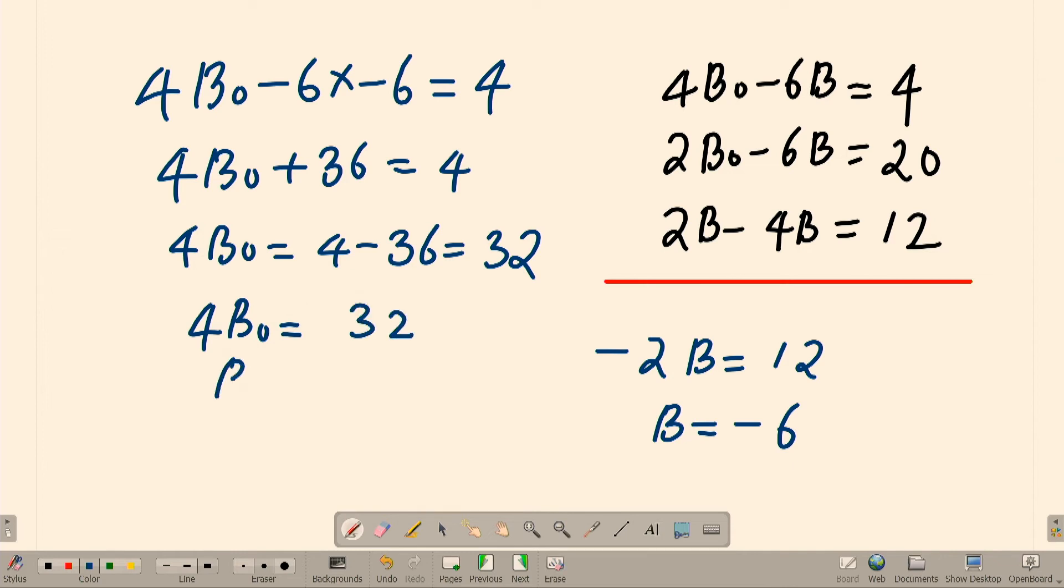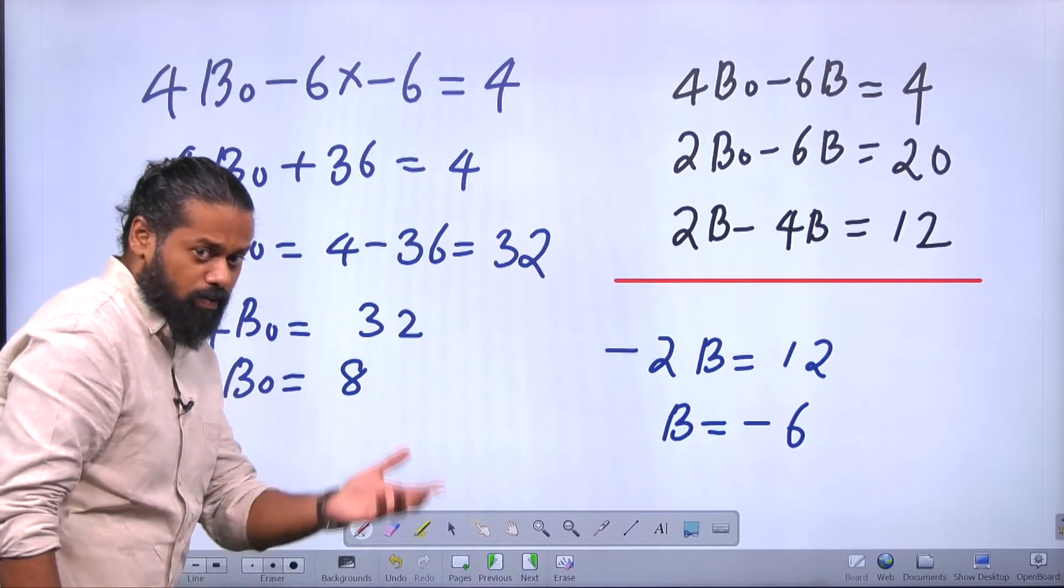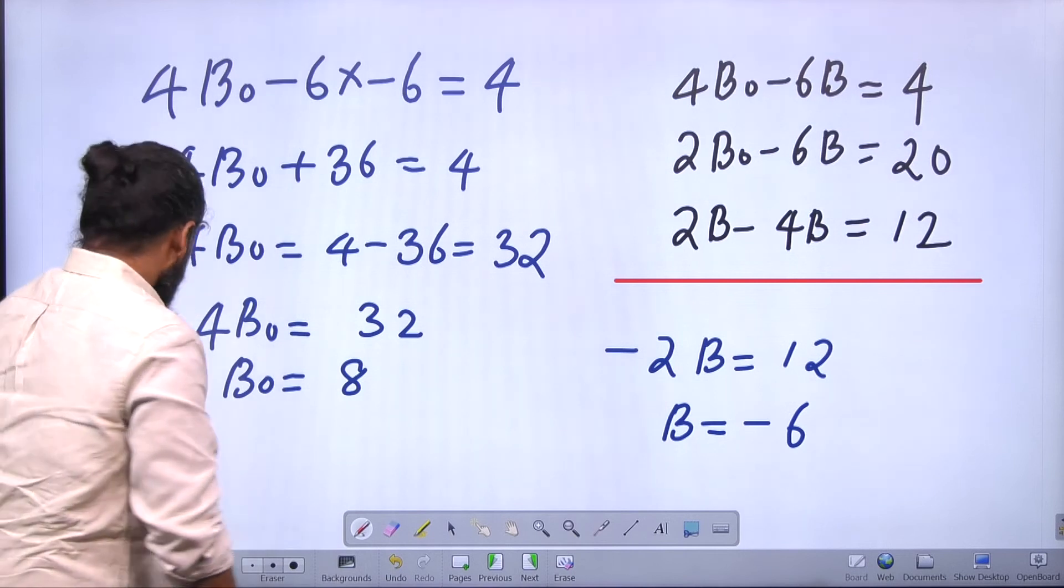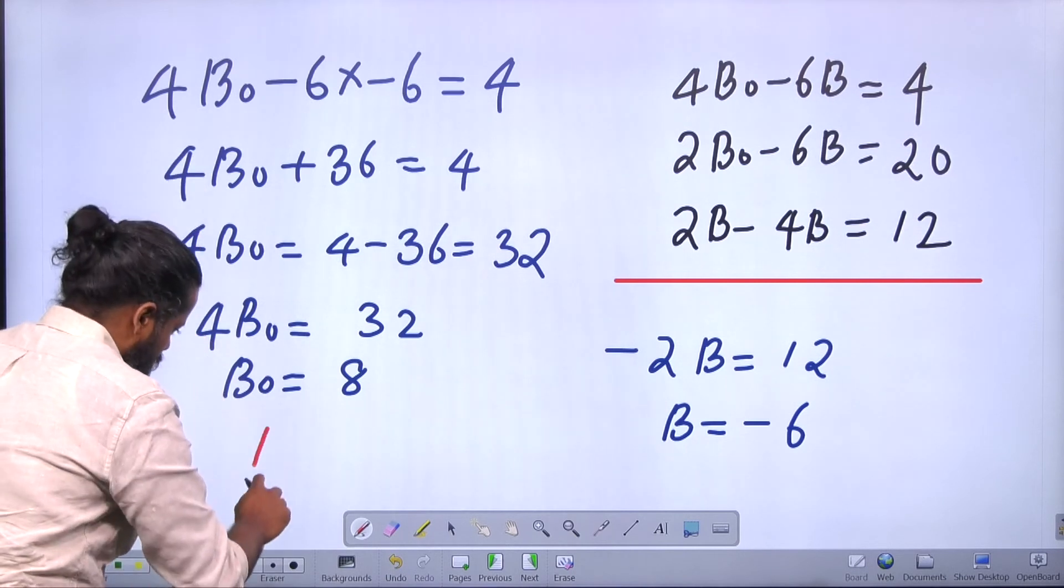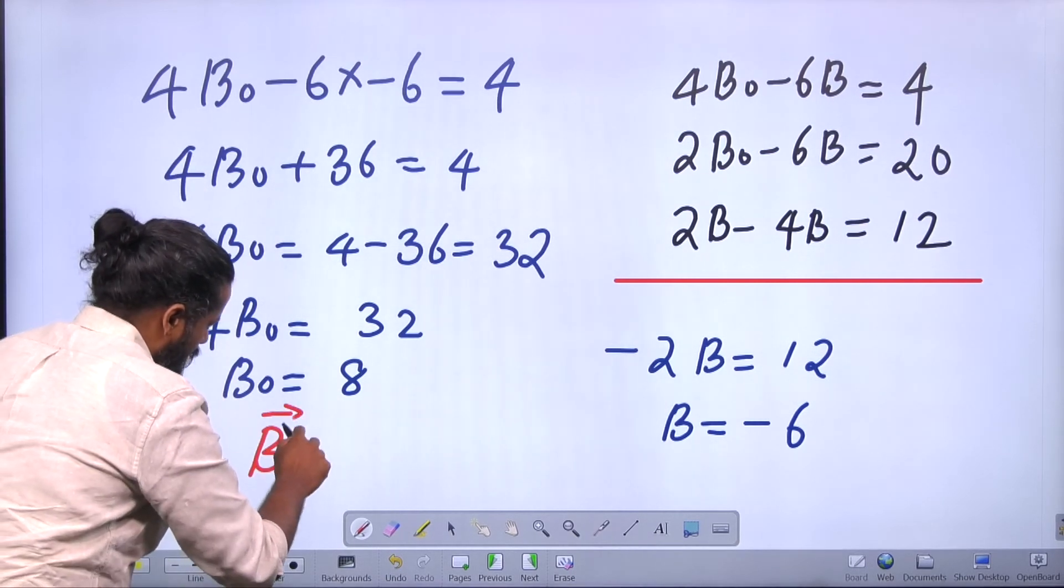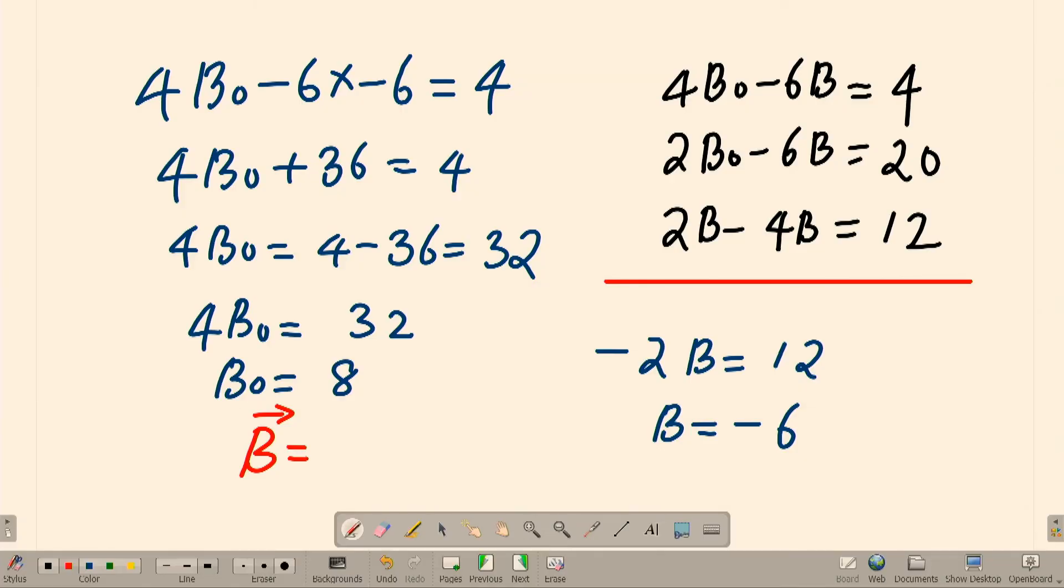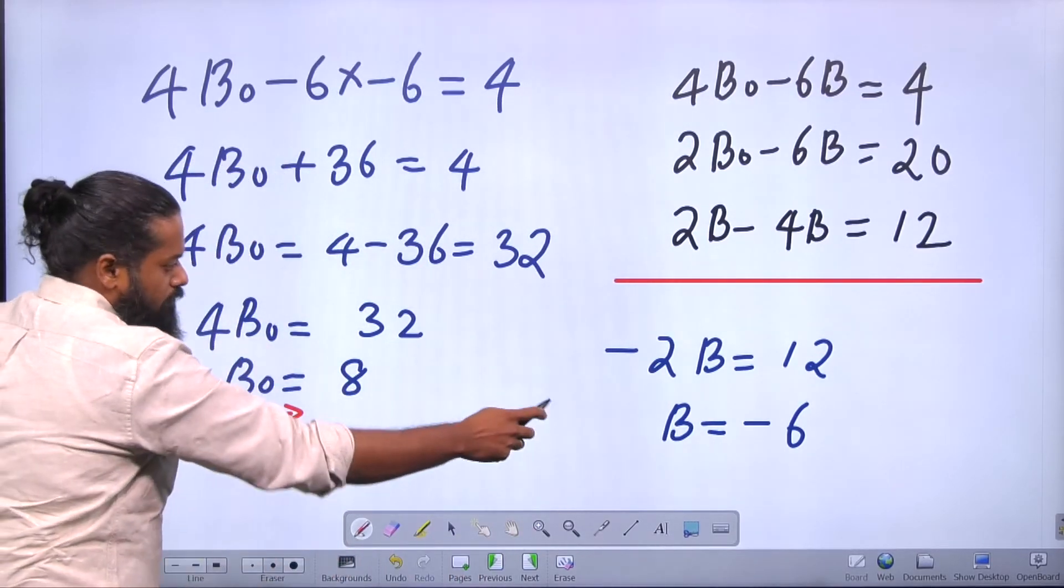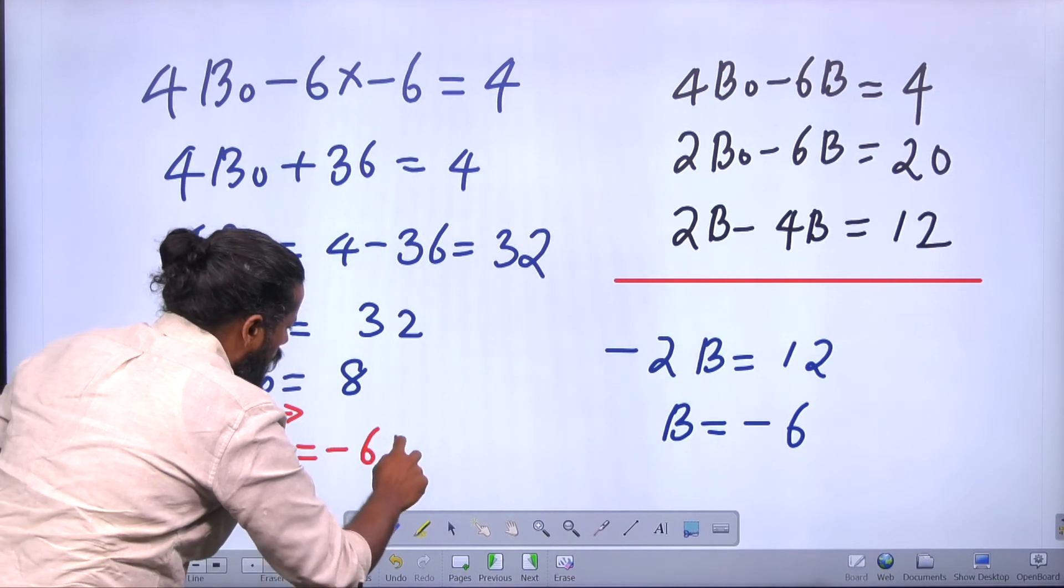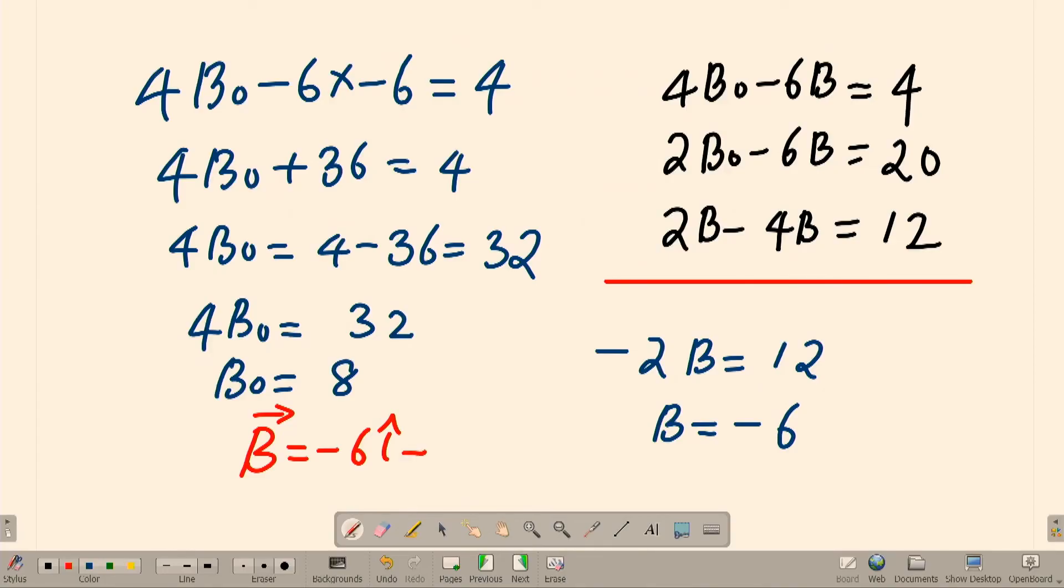We got both quantities, I mean B and B₀ we obtained. Now the magnetic field vector is going to be, as per the initial expression, it is given as Bi + Bj + B₀k. That means B we obtained, -6i cap, then -6j cap...